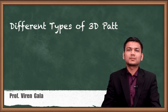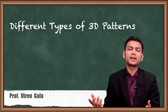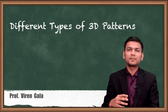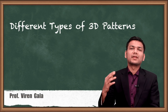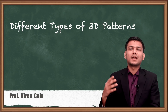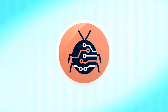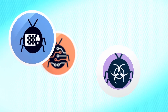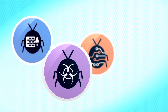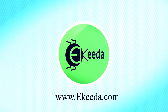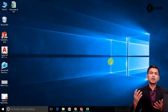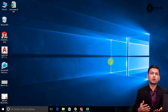Hello friends, today we will learn different types of 3D patterns in SolidWorks. Basically here we will learn linear pattern, circular pattern, sketch driven pattern, curve driven pattern, fill pattern, variable pattern and table driven pattern. Now let's see how to use the different types of pattern in SolidWorks. So let's go in SolidWorks.